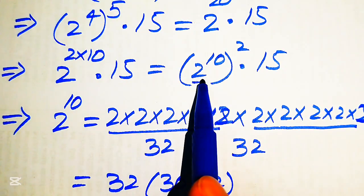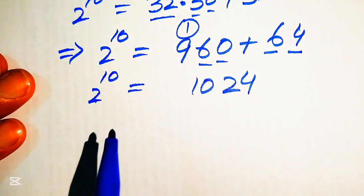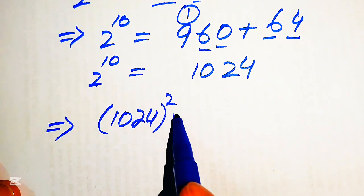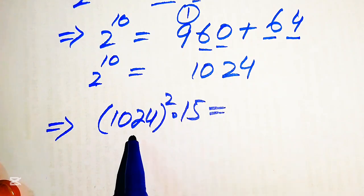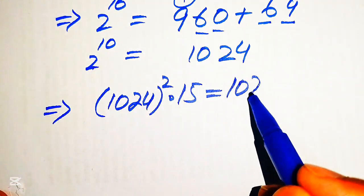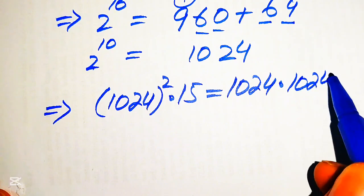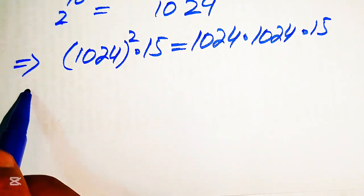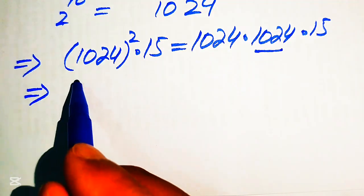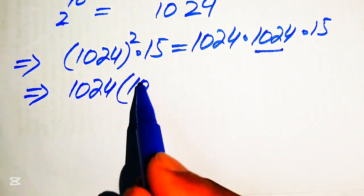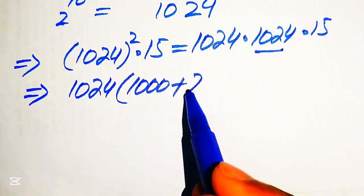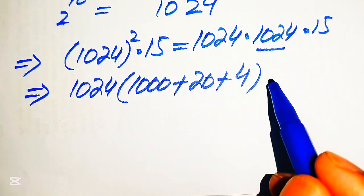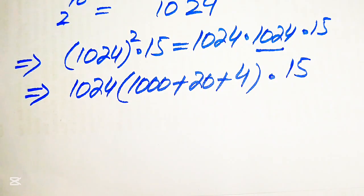Now we substitute the value of 2 to the power of 10: we have 1024 squared, multiplied by 15. We write this as 1024 multiplied by 1024, multiplied by 15. We rewrite 1024 as 1000 plus 20 plus 4, and at the last we multiply by 15.